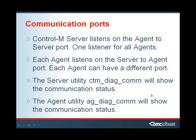There are two ports that we're concerned with in this video: the agent-to-server port and the server-to-agent port. The Control-M server listens on the agent-to-server port. There is only one port running on the server that listens for all of the agent communications from all of the different agents. Each agent listens on the server-to-agent port, and each agent can have a different server-to-agent port. The server utility CTM-DIAG-COM will show the communication status with a particular agent. The agent utility AG-DIAG-COM will show the communication status between that agent and the server. Let's take a quick look at these utilities.